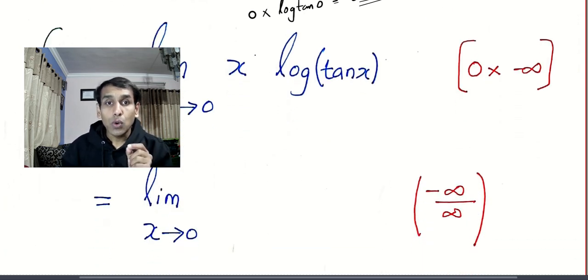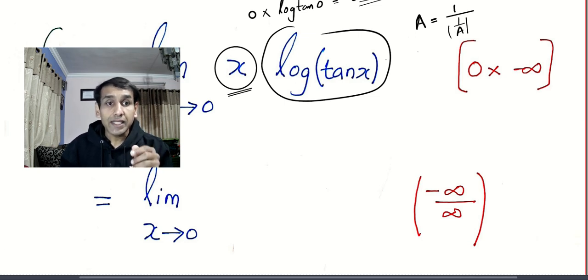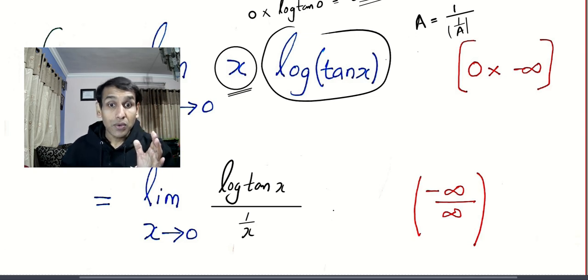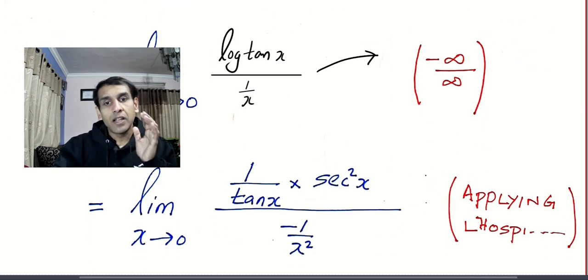So 0 multiplied by log tan 0 and that gives me 0 multiplied by log 0 which happens to be 0 into infinity. I don't care about that minus. The method is pull one of the quantities to the denominator using the trick a is equal to 1 by 1 by a and you can pull this x to the denominator or you can pull this log tan x to the denominator.